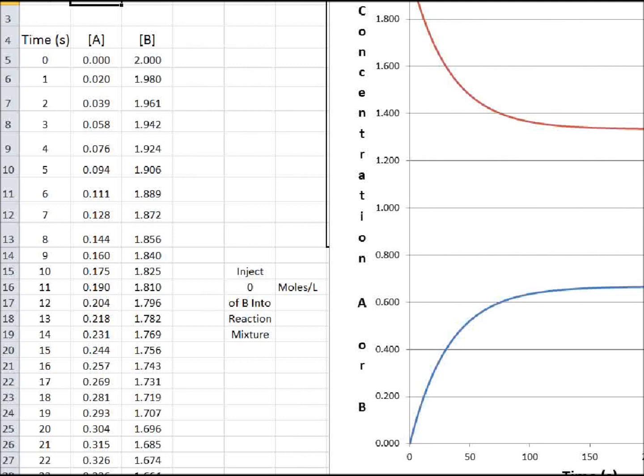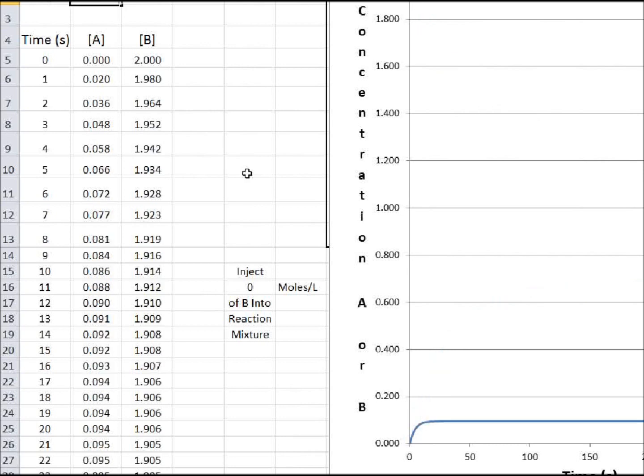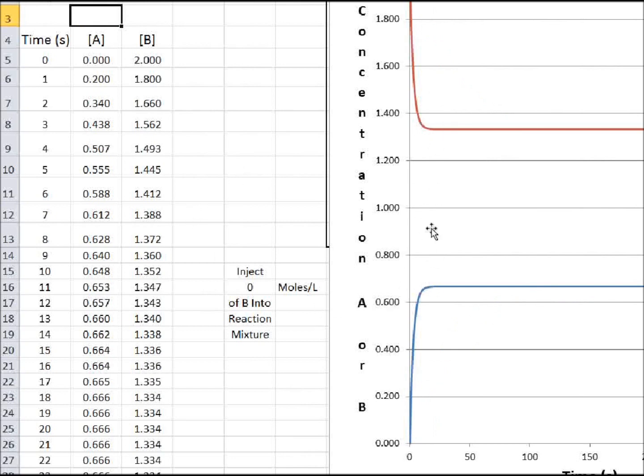Now let's make the equilibrium constant the same, but let's make the two rate constants a factor of 10 larger. I'm going to go 0.2 and 0.1. And you can see it comes to equilibrium much faster.